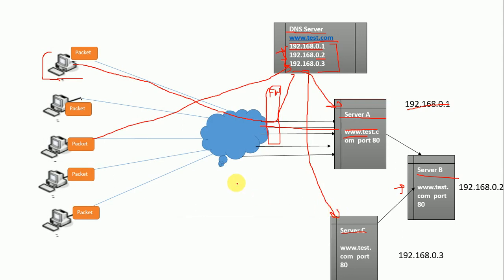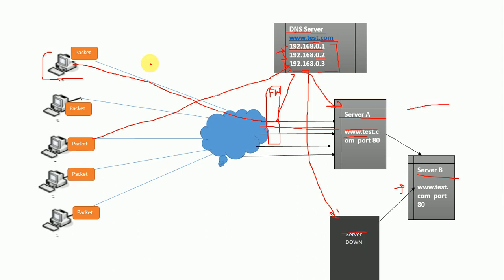Now everything is working fine and my website is accessible by all users. But after some days, this server went down and connectivity is lost. Now when a computer requests the website, my DNS will still load balance as before because it does not have any technique to remove that server's entry from the database.